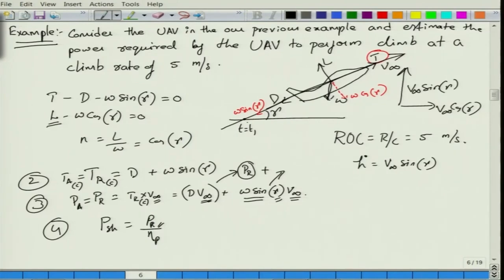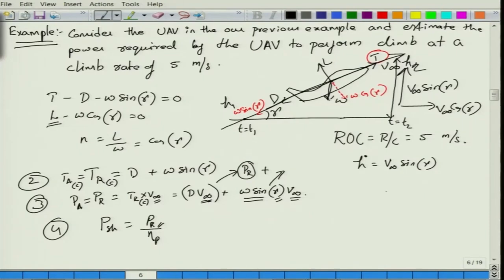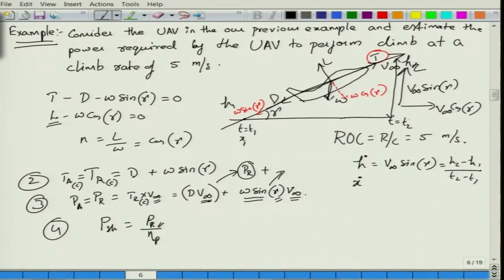The total change in vertical distance is (h2 − h1) / (t2 − t1), which is Ḣ — the vertical component of velocity. When climbing at a particular γ, you also cover horizontal distance ẋ = (x2 − x1) / (t2 − t1) = V-infinity cos γ. These h and x coordinates are measured with respect to an inertial frame fixed on the ground.